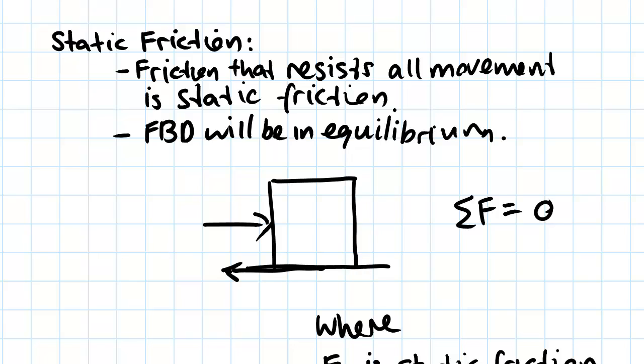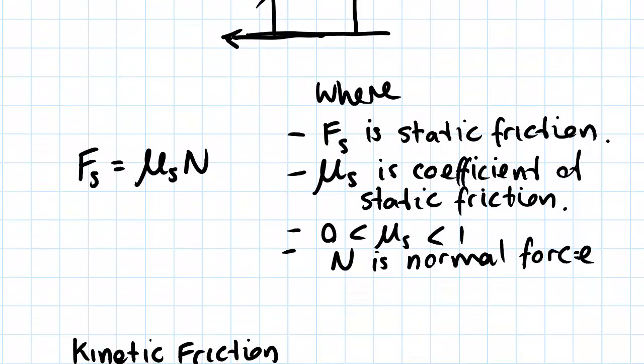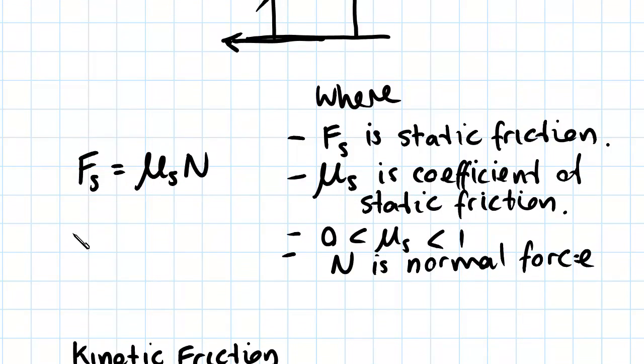So the way that we work out the magnitude of the static friction is via the use of equilibrium equations. If this block doesn't move, we know that it's in equilibrium. So we can apply the sum of the forces in either the x or y direction is equal to zero, and that allows us to solve for static friction. So the formula which defines static friction is fs.